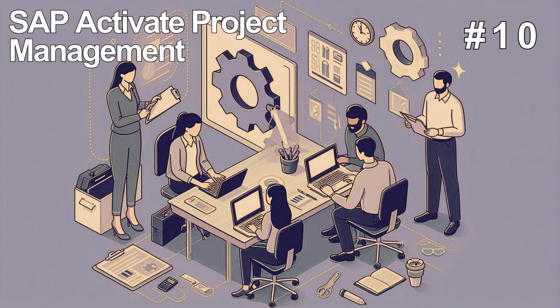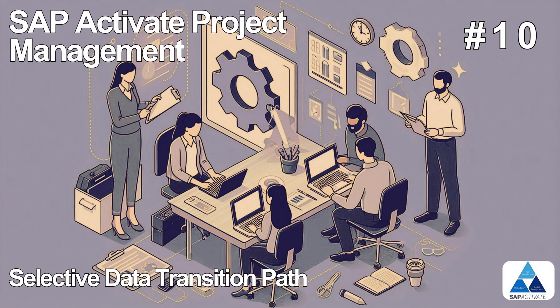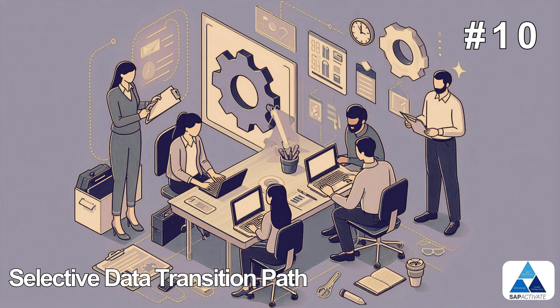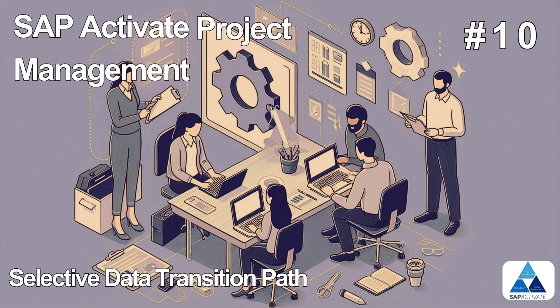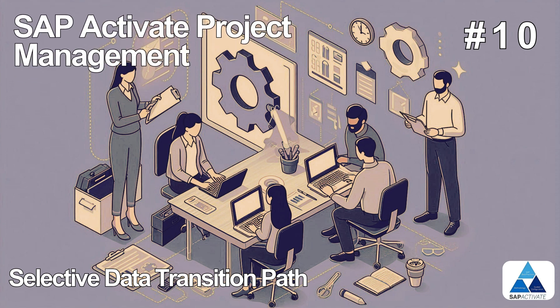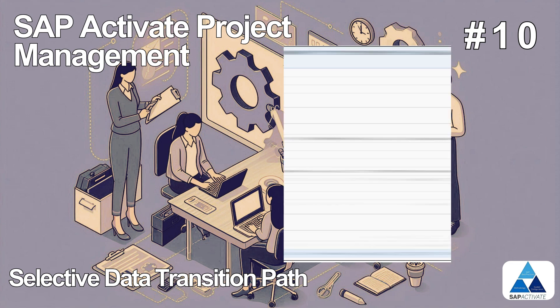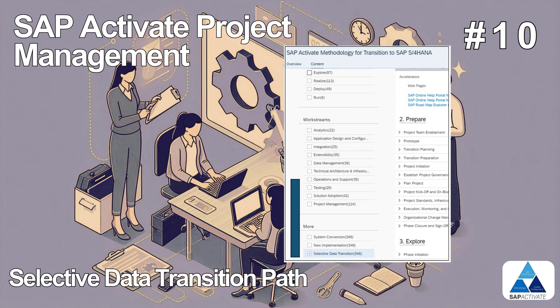Welcome to the final part, part 10, of the SAP Activate Project Manager series. In this episode, we're focusing on the third and final transition path: the selective data transition.